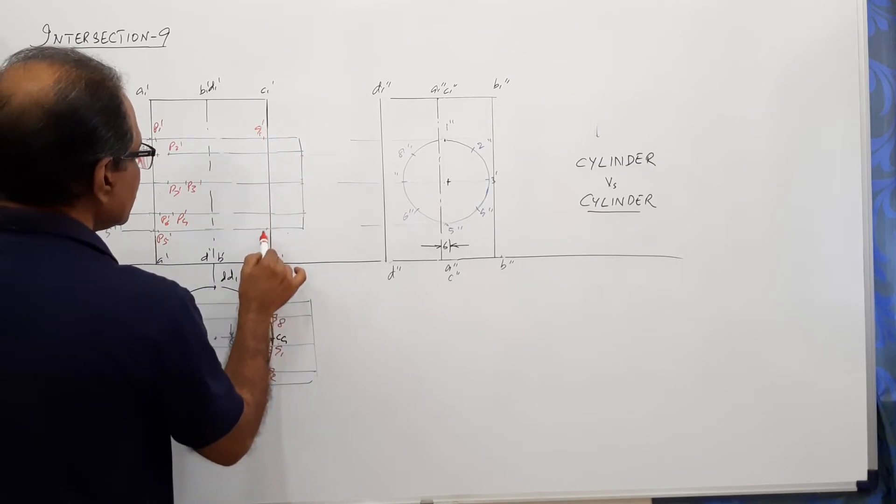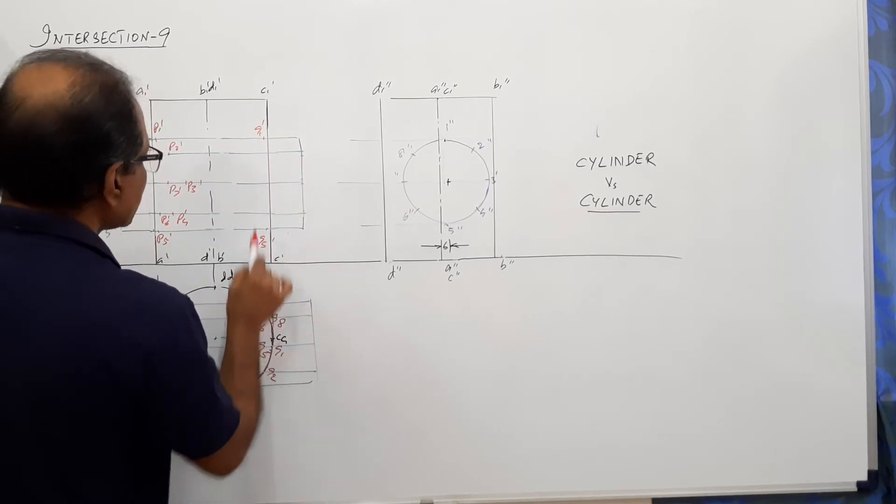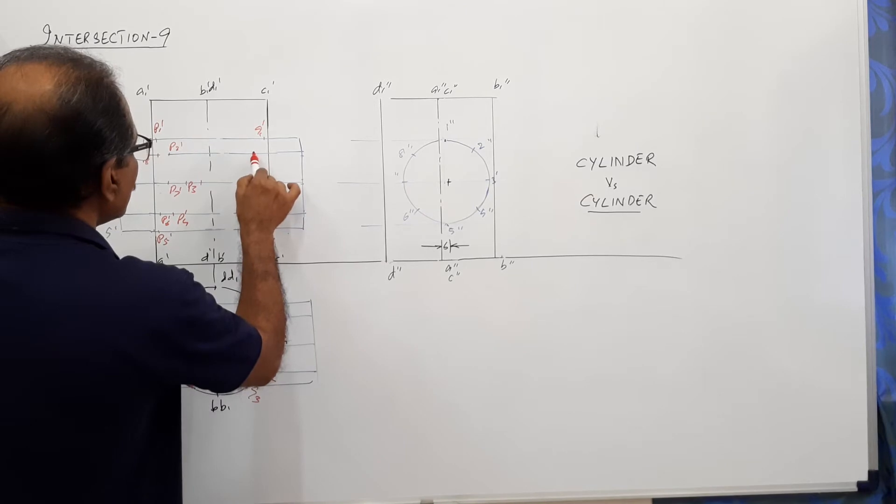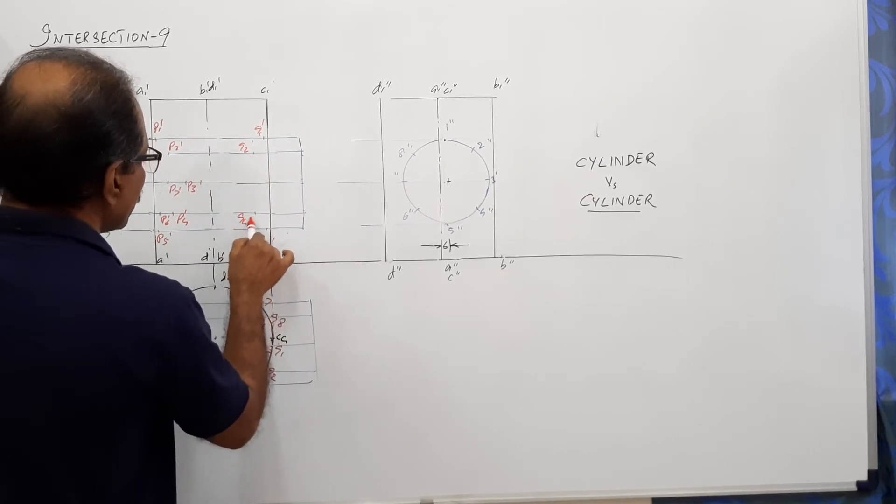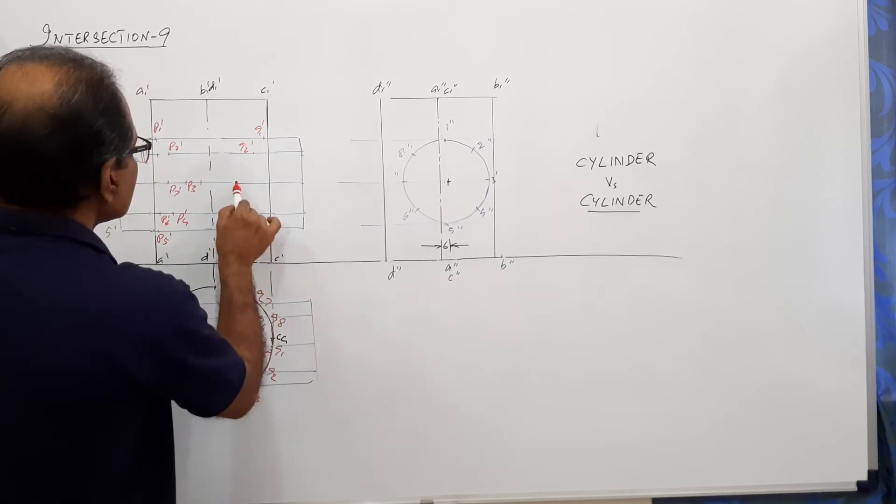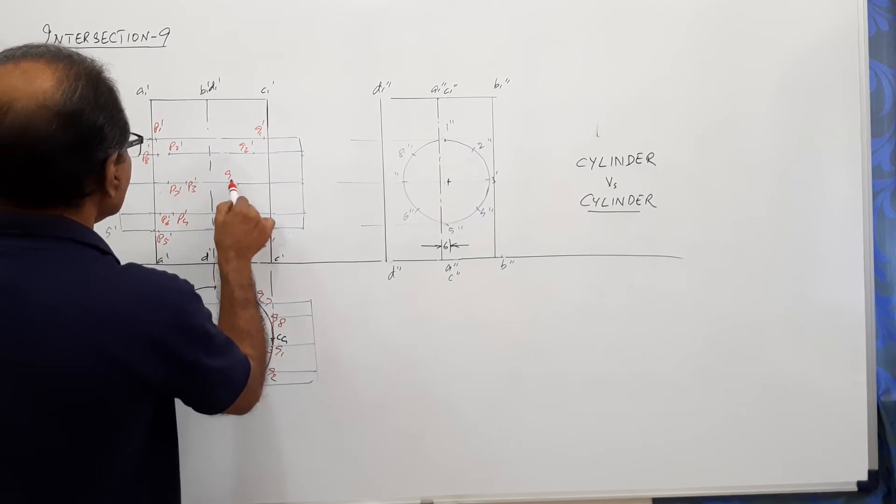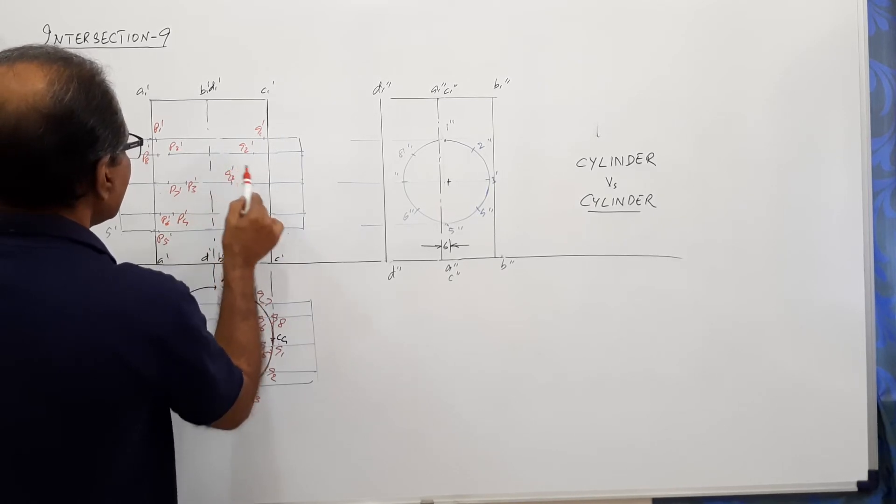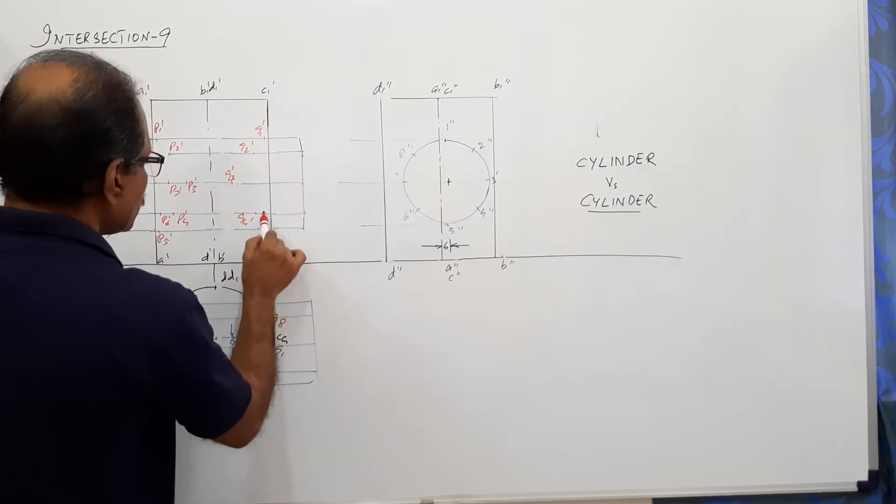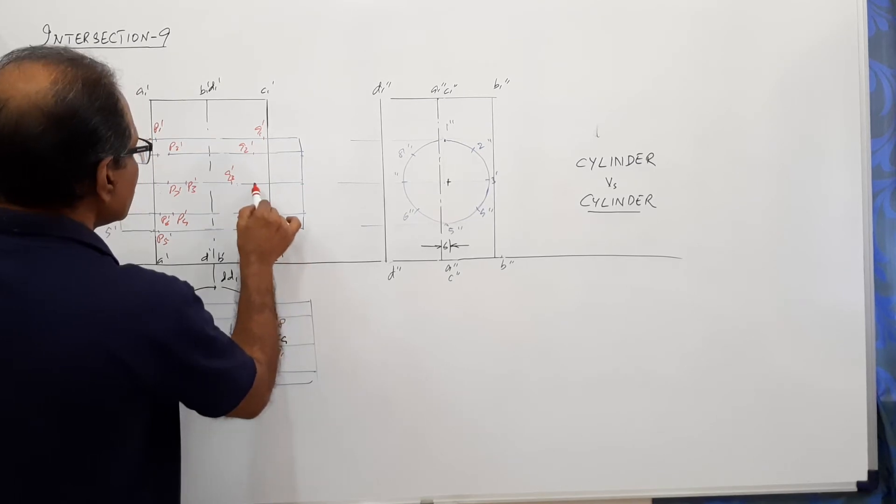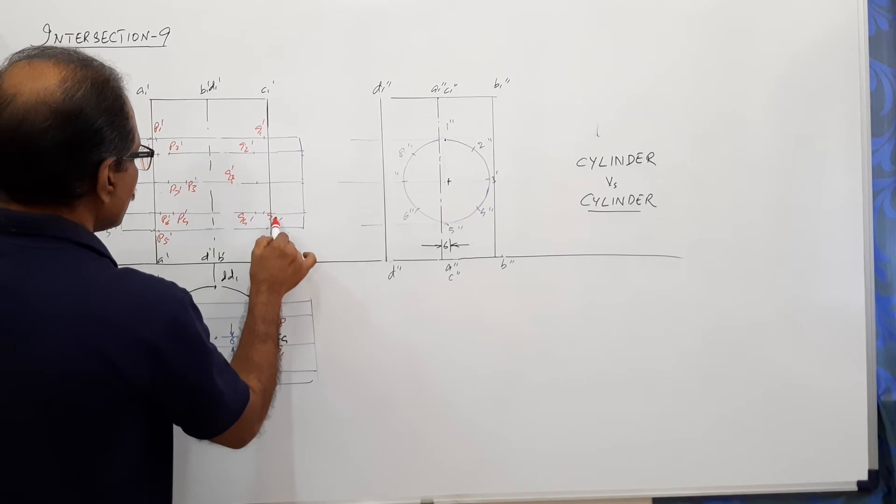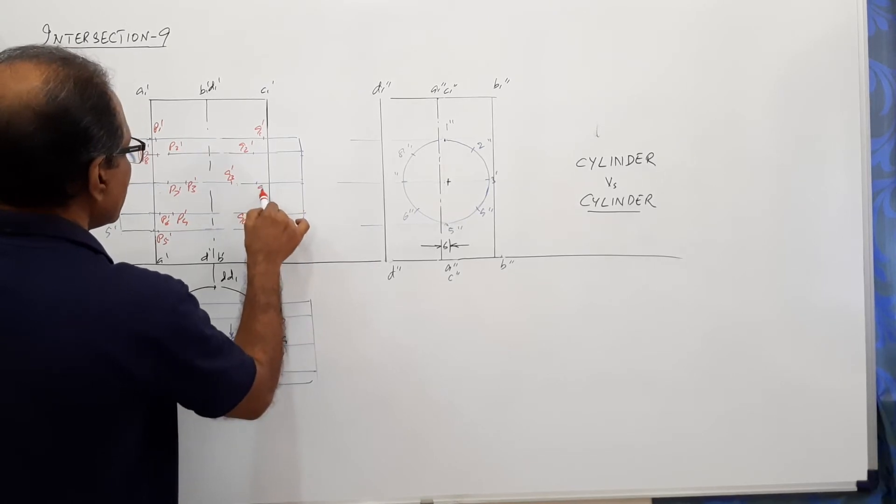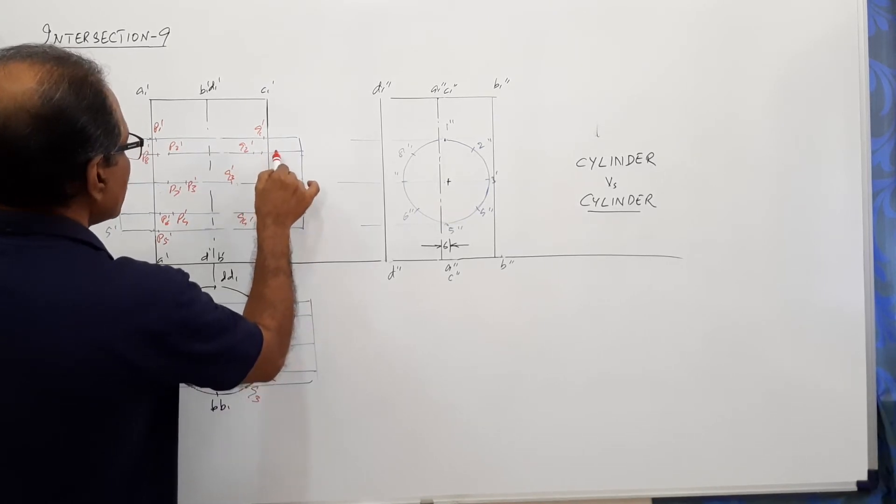This is P1 dash. This is P5 dash. Projector through P2 will give you P2 dash. Somewhere here is P4 dash. This is Q3 dash. This will be Q4 dash. This will be Q6 dash. This will be Q7 dash. And this will be Q8 dash.